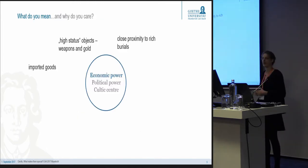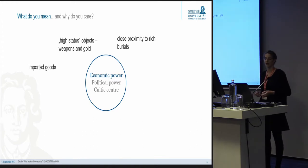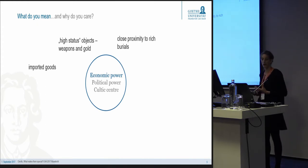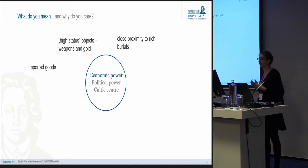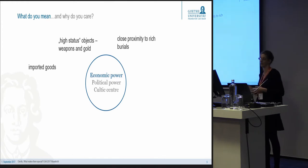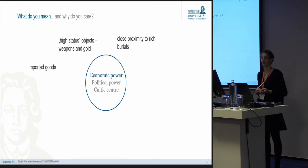I summed up these things and thought about what we actually mean. These are some general archaeological ideas — there are obviously others, depending on your theoretical background. For economic power, imported goods are most often mentioned, as an indicator of how much surplus you have to obtain fancy things from far away. People also think about what constitutes a high-status or prestigious object; for the Bronze Age, weapons and gold are usually cited.